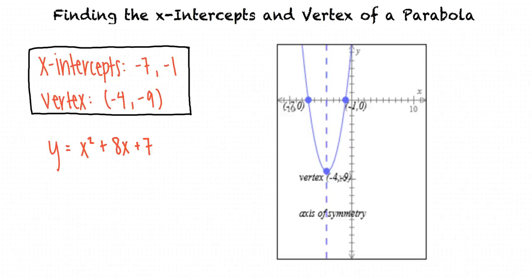Then, to find the vertex of the parabola, we use the midpoint formula to determine the x-coordinate exactly midway between the two x-intercepts. From here, we can substitute this x-value into the original quadratic equation to solve for the y-coordinate of the vertex.